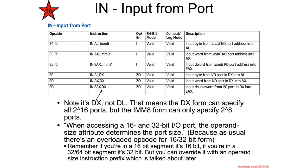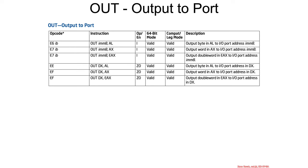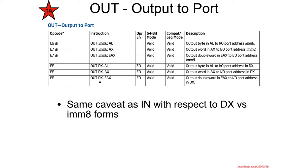There are instruction operand size override prefixes that let you access just 16 bits instead of 32 bits, which we'll cover later as optional material. Paired with IN, there is an OUT assembly instruction with the same caveats regarding DX as the 16-bit output port specifier. So if you want to output a 32-bit value to a 16-bit port address, you'd need to use the DX form; otherwise you can use the 8-bit immediate port form.